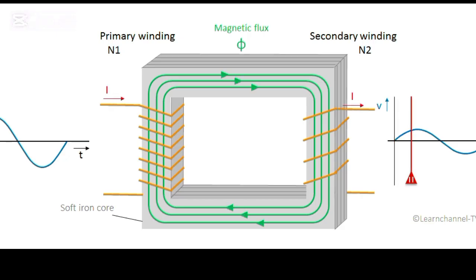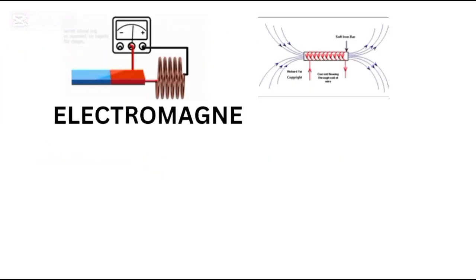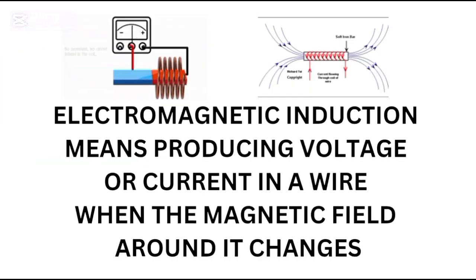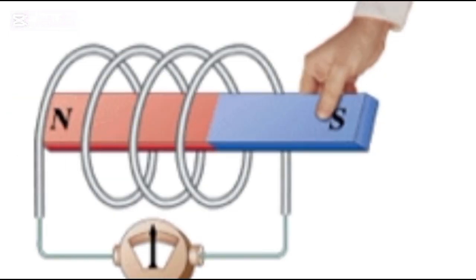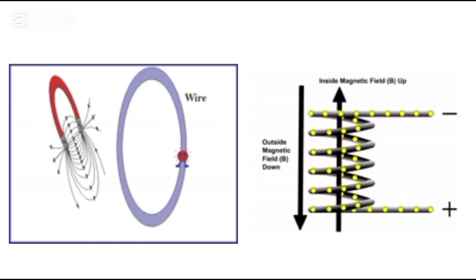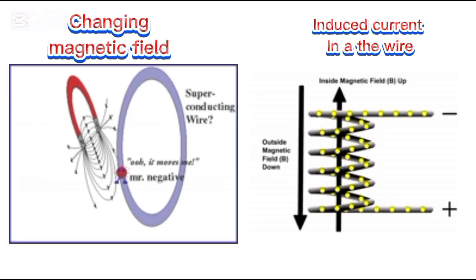It works using the principle of electromagnetic induction. Let's break it down. Electromagnetic induction means producing voltage or current in a wire when the magnetic field around it changes. If you move a magnet through a coil or move the coil around a magnet, the magnetic field changes. That change induces a current.